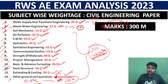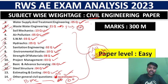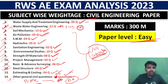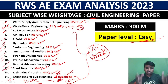If you cover all of this, you are dealing with 300 marks in the paper. The RWS Civil Engineering paper level is very easy — the questions are straightforward but still require preparation.